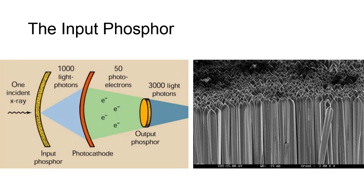A modern input phosphor will be composed of a layer of microscopic needle-shaped crystals made of cesium iodide. These are fluorescent phosphors, which will transform the X-rays interacting with it into visible light. This light is emitted in yellow-green wavelength, and the columnar shape of the crystal shown in this microscopic view of cesium iodide helps to prevent dispersion of the emitted light into different directions, which in turn improves image resolution.